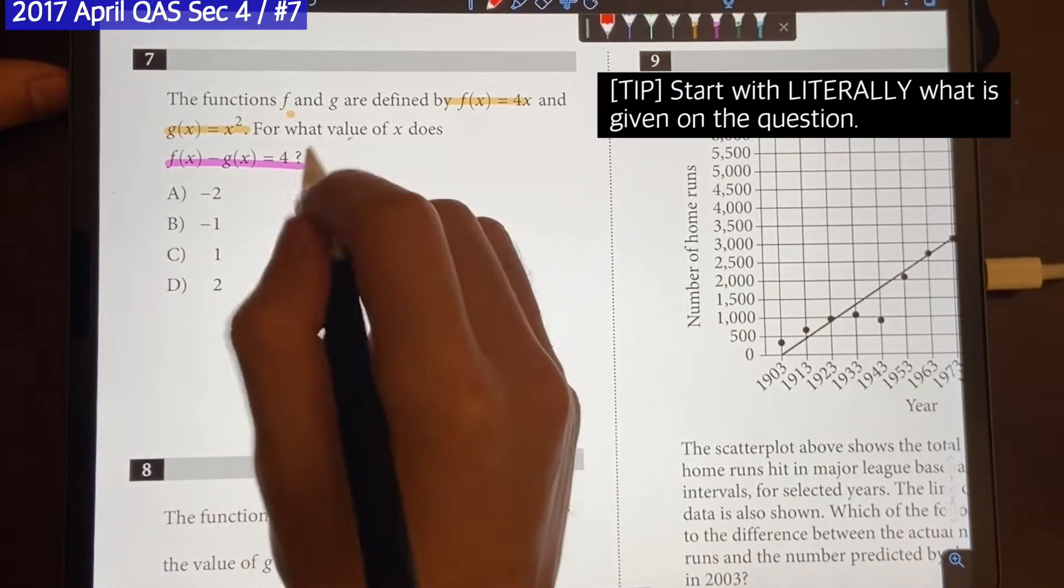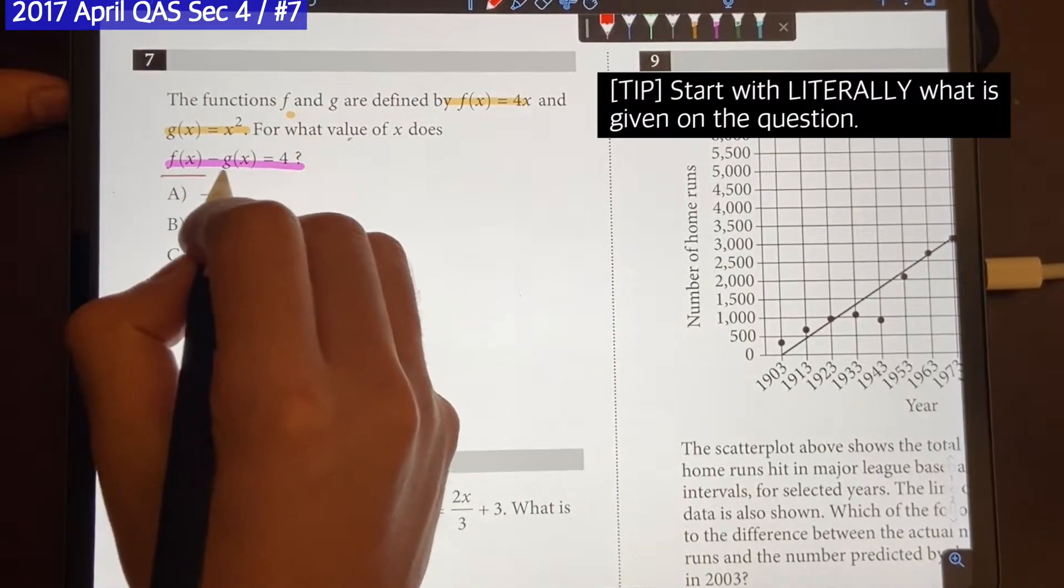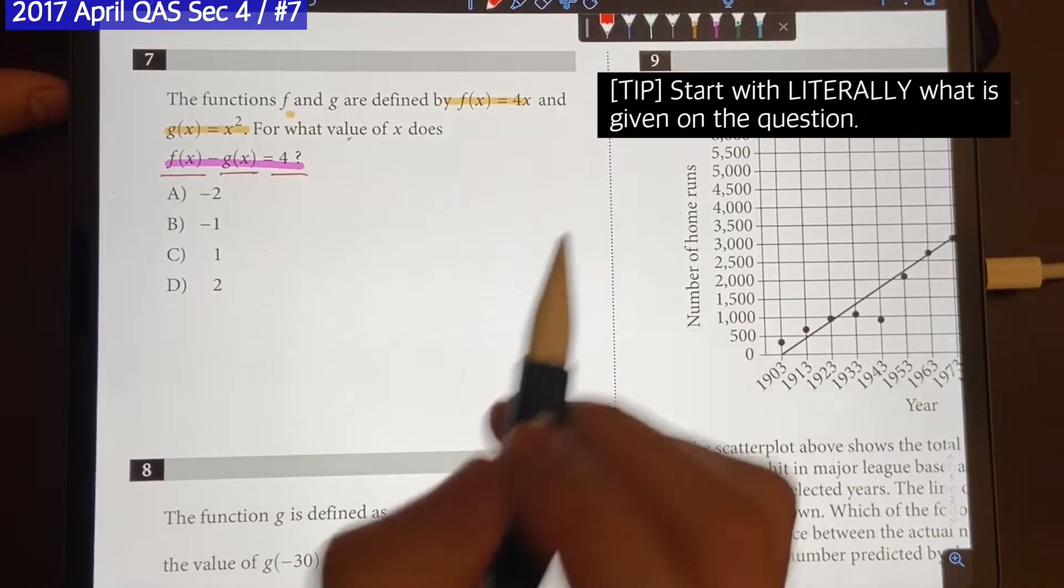For instance, if you look at it, it says, for what value of x does f of x minus g of x equal to 4, right? So you can just start with that.